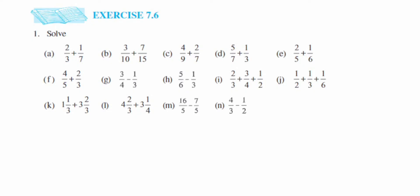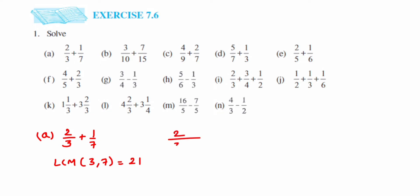Here I am doing exercise 7.6, first question, from the fractions chapter of Class 6. These questions are really important from an exam point of view. The first question is 2 upon 3 plus 7 upon 3. Most of the questions are unlike fractions, so the main aim is to make them like fractions. Unlike fractions means when denominators are different, so to make them the same I am going to take the LCM of the denominators, which is 3 and 7, giving 21.